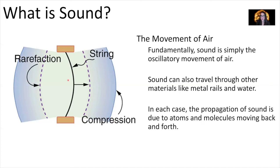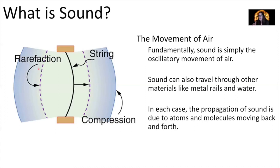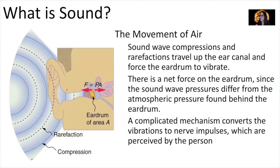For example, someone plucks a string and the string disturbs the surrounding air. As the string vibrates, it compresses the air — you get material that's compressed and then material that's less compressed, called a rarefaction. You get these waves set up in the material: regions where the material is more compressed, then rarefaction regions, then compressed again. If the string's vibration has a constant frequency, you set up sound waves with a fixed frequency and a fixed wavelength.